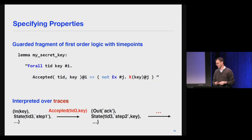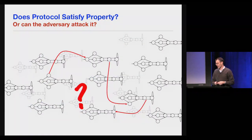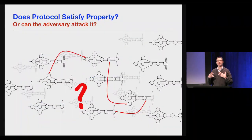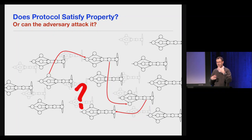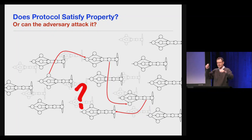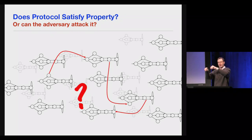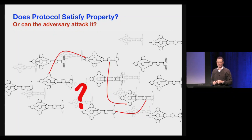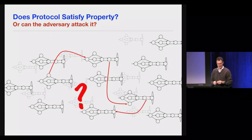A property holds if all possible traces of the protocol satisfy it. You specify good properties, negate them, and see if you can find traces that violate them — that's how model checking works. At the end of the day, Tamarin takes these specifications of the role automata, the adversary, and the security properties, and uses constraint-solving algorithms to try to find if the different protocol automata can be run together with the adversary to attack the protocol. If not, it produces a proof that no possible attack can exist.